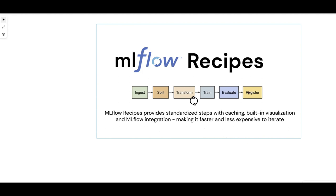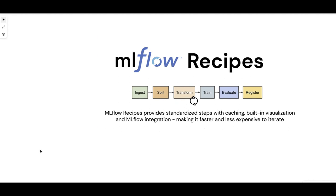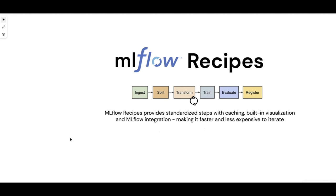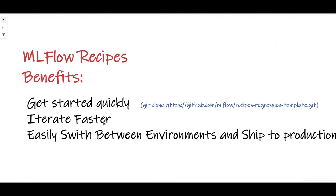Let's say I rerun this process because I made a slight change on the transformation code, but it's the same data — ingestion is the same, splitting is the same. If I'm running it all again, why should I need to run ingestion and splitting again if I just changed the transformation? MLflow Recipes won't run those two steps and will only run the transformation. That's why you'll save time, making it faster and less expensive — you'll pay less for compute because those two steps won't run.